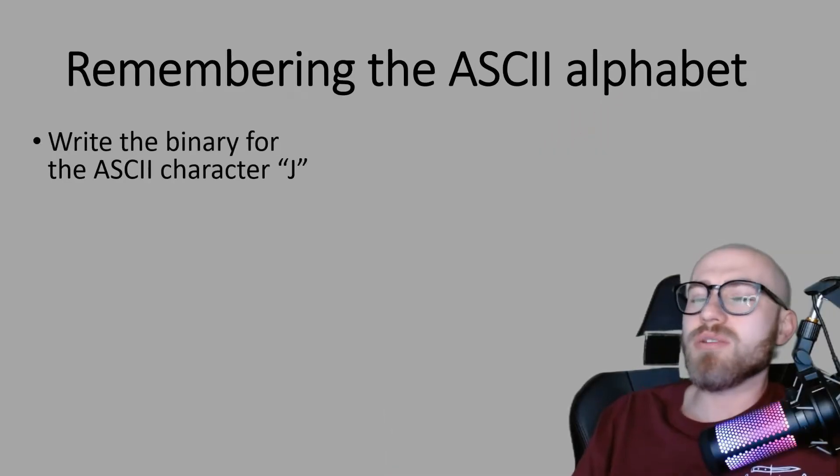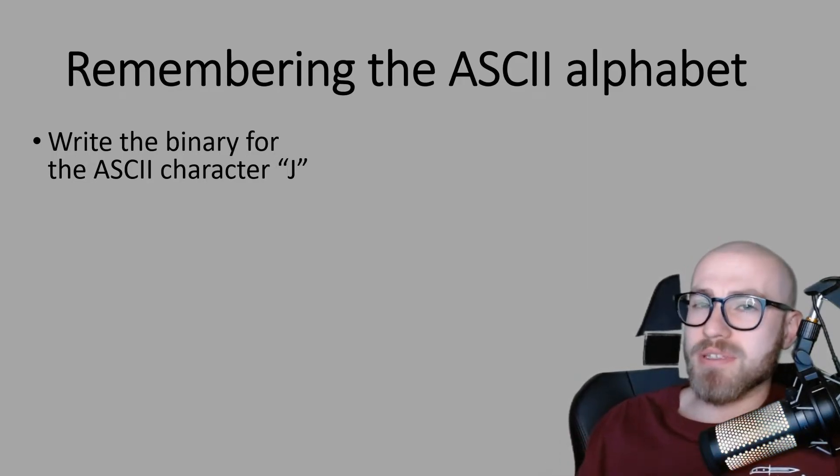In the latest exam there was an unusual question which asked you to write down the binary for an ASCII character, so we need to be able to write out the ASCII character alphabet and it is really straightforward to remember as long as we follow these steps. So let's do an example, write the binary for the ASCII character J. Now notice that this is a capital J and that makes a difference to how we're going to start our byte of information.